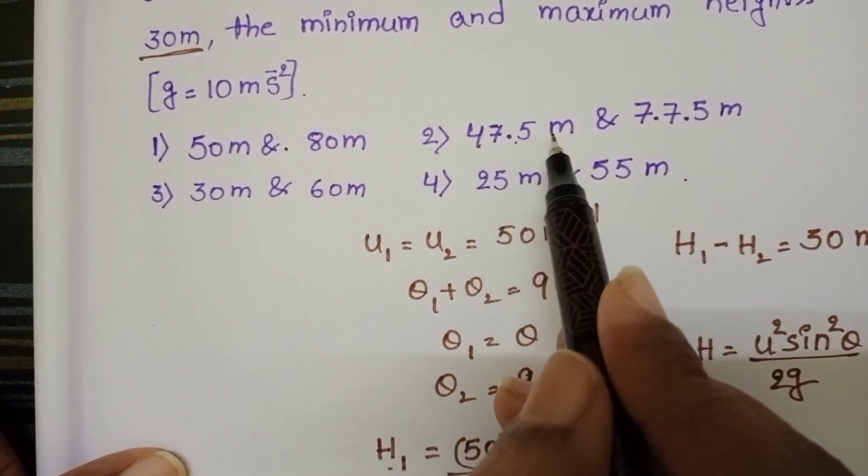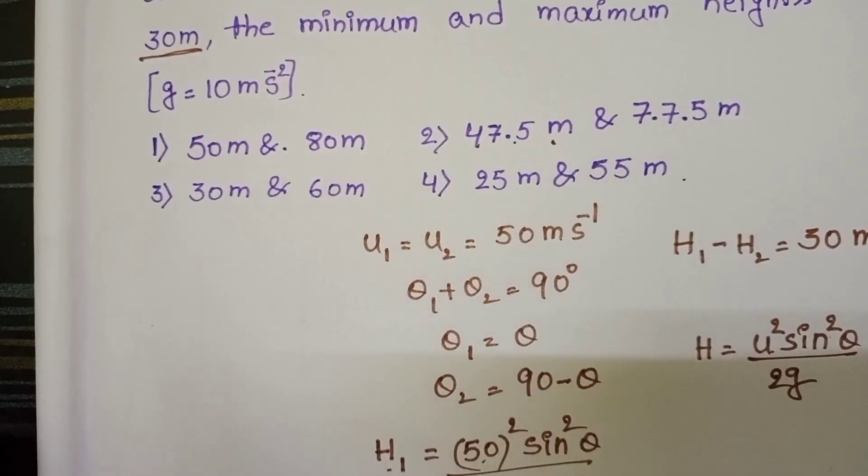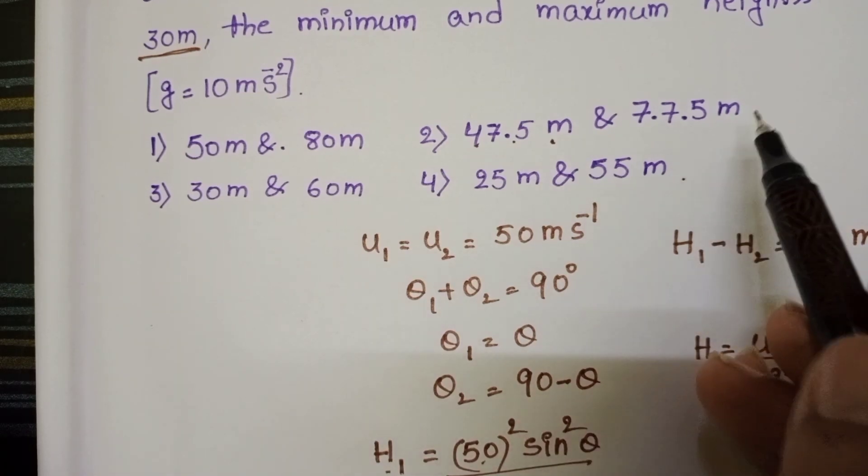Minimum height is 47.5 meters and maximum height is 77.5 meters. So second option is correct.